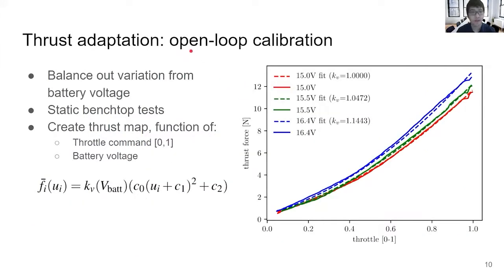For open-loop calibration of the thrust, we put a motor and propeller on a test stand and change the throttle command from 0 to 1, and we measure the thrust force at different voltages. Given the data we got, we propose this model which maps the throttle command to the thrust force generated by each motor. Here, F_i is the thrust generated by motor i, U_i is the throttle command, K_v is the parameter dependent on the battery's voltage V_bat, and C_0, C_1, and C_2 are three parameters independent of the battery's voltage.